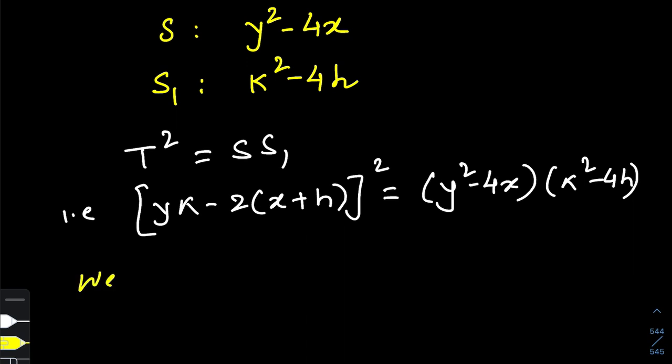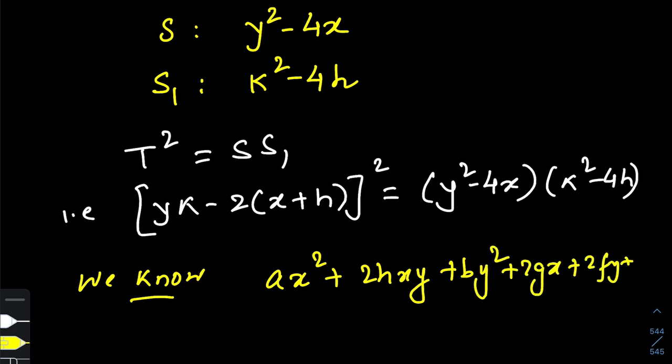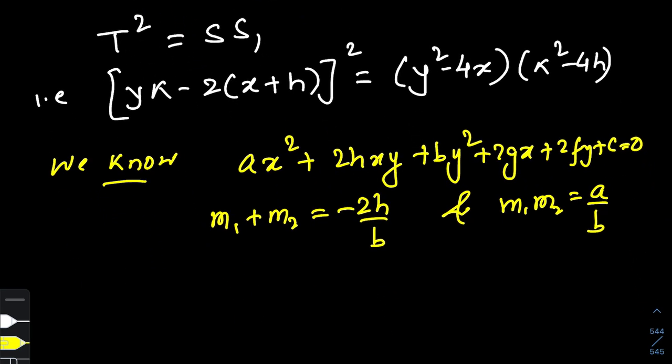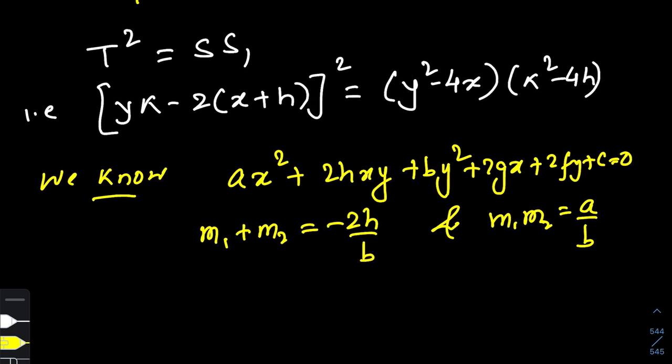For a pair of straight lines ax² + 2hxy + by² + 2gx + 2fy + c = 0, we know that if m₁ and m₂ are the slopes of the lines constituting this pair, then m₁ + m₂ = -2h/b and m₁m₂ = a/b. We will be utilizing this idea to actually get the locus.